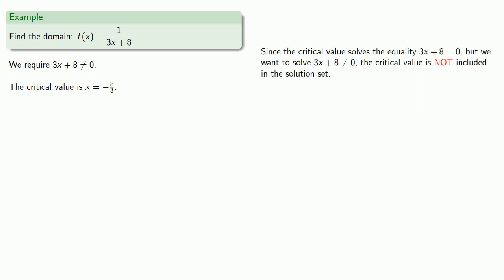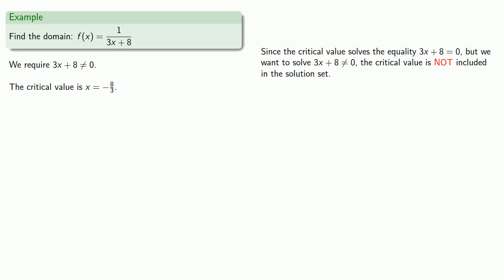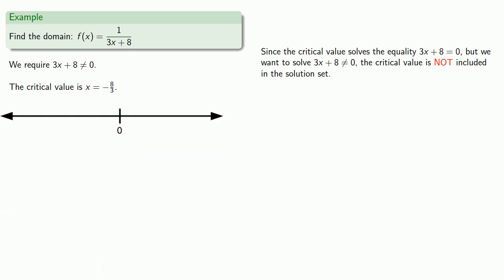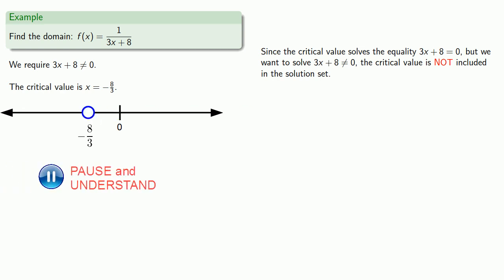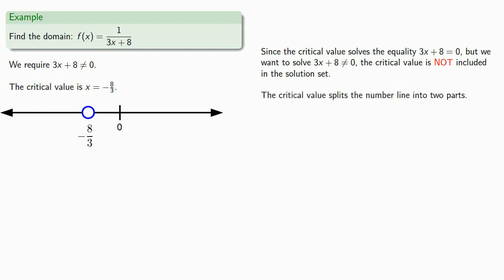Since the critical value solves the equality 3x + 8 = 0, but we want 3x + 8 ≠ 0, the critical value is not included in the solution set. So let's graph the critical value on our number line. Since it's not included, we'll put an open circle at x = −8/3. The critical value splits the number line into two parts, and we test a point in each part.